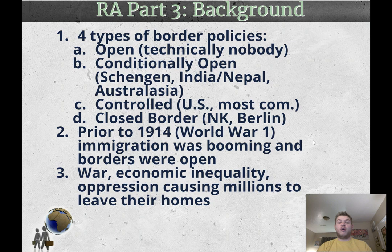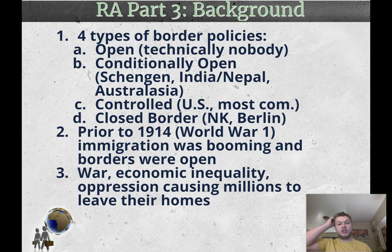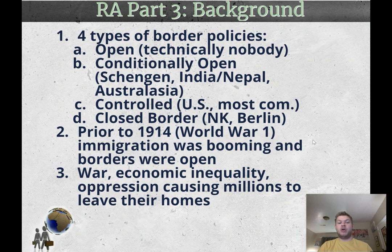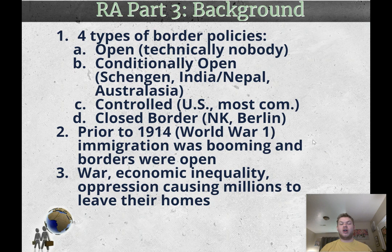Before World War I, immigration was really common — that's why we hear that people in the United States or their ancestors are from all over the world — because border restrictions were not very common. But after 1914, when countries invaded nearby nations, specifically Germany invading other European countries, nations started closing their borders more and more. The problem that motivated this topic is that there is war in Ukraine, Syria, Iraq, and Turkey; economic inequality all over the world; and oppression from both non-democratic and democratic governments causing millions of people to want to leave their homes, only to be met with controlled and closed borders.